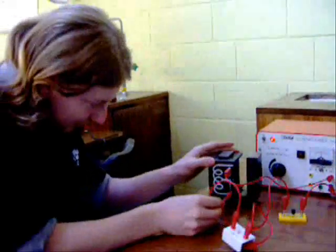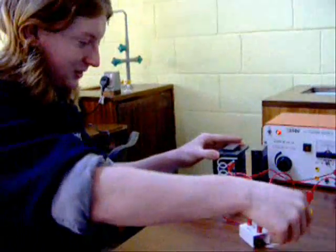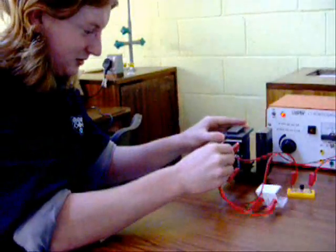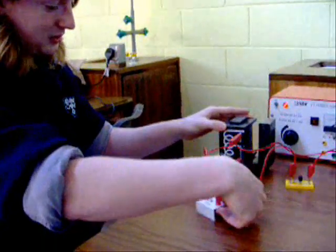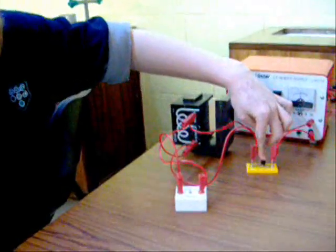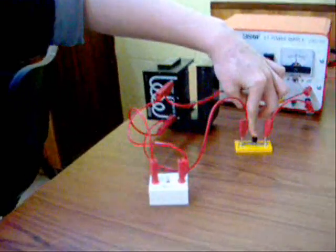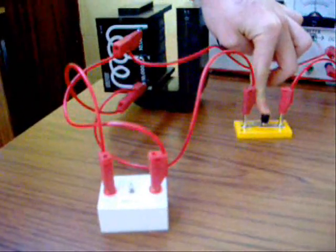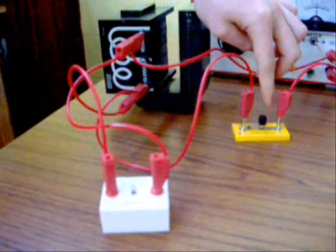Connect the lamp in parallel to the coil. Close the switch and 15 volts is not enough to light the lamp. Open the switch and self-induction lights the lamp.